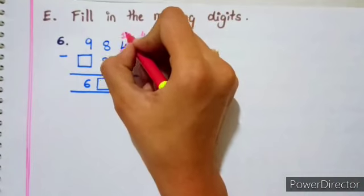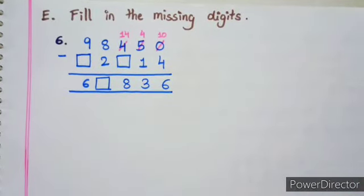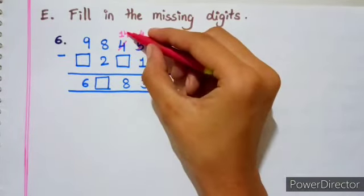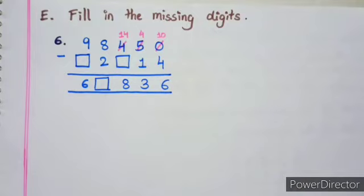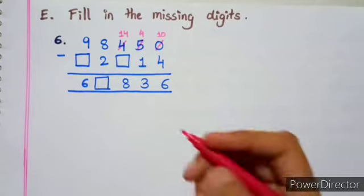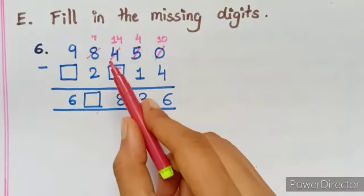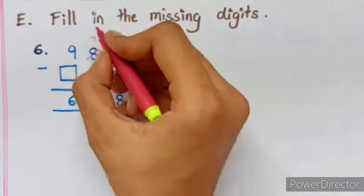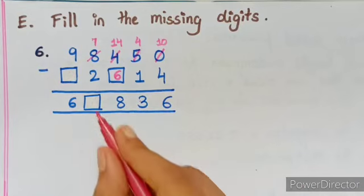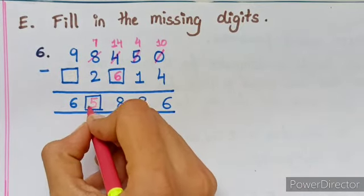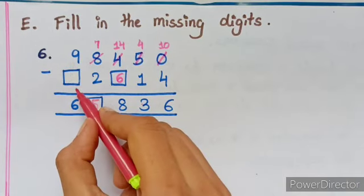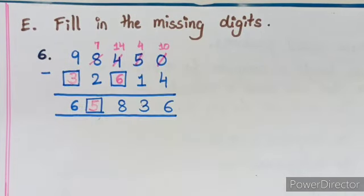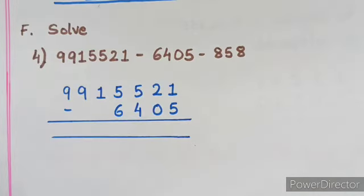Now 4 minus something which gives 8, is it possible? No, which means this is 14. And 14 minus what gives 8? For that you have to count ahead of 8 till 14. So 9, 10, 11, 12, 13, 14, which means 6. So here it is 14. That means it has taken borrow from this number which is 8, so after that it will be 7. 7 minus 2 is 5. And then 9 minus what should be 6? It will be 3.